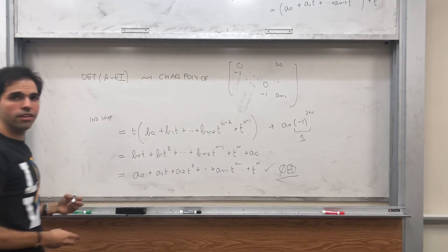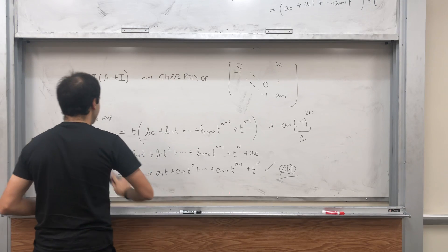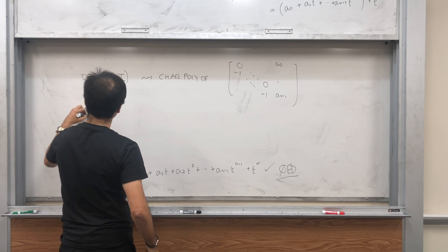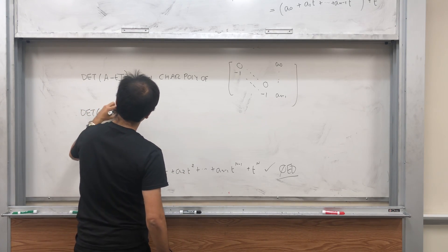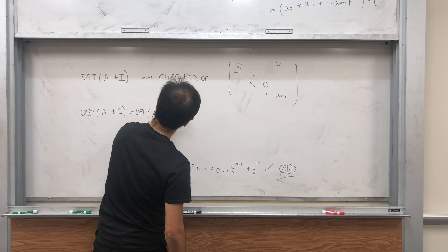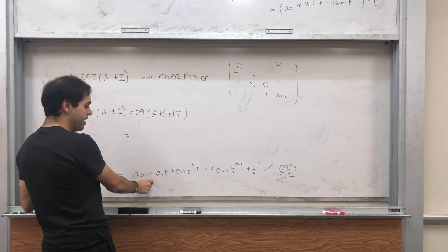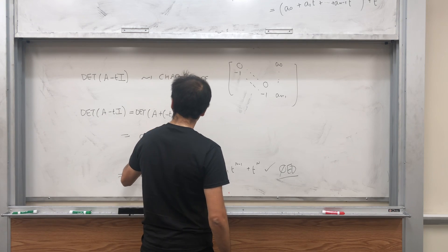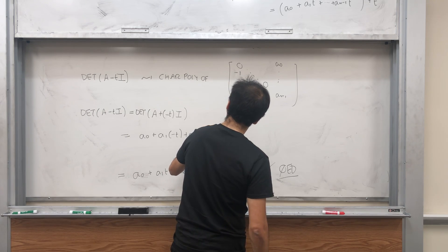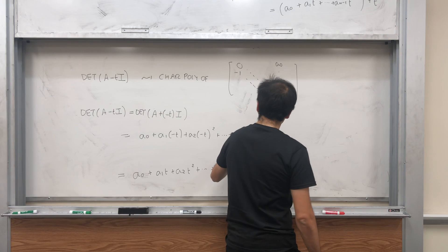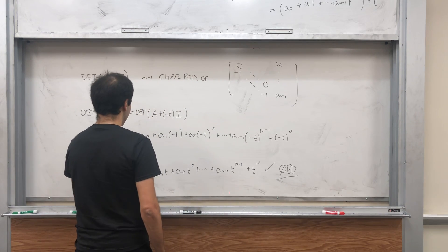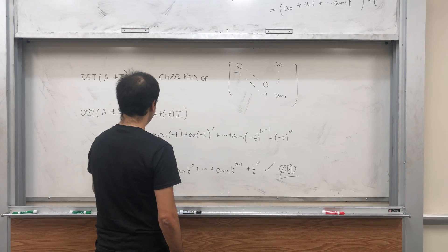Well it turns out we can literally use the same result, so we don't need to redo the proof. And we get that, well look, determinant of A minus TI. That's determinant of A plus minus TI, which is just the same thing but with minus T instead of T. A_0 plus A_1*(-T) plus A_2*(-T)^2 plus dot dot dot plus A_{n-1}*(-T)^{n-1} plus (-T)^n.